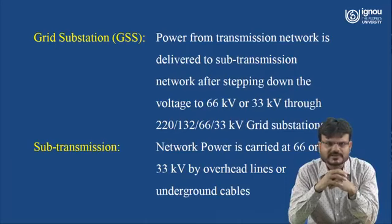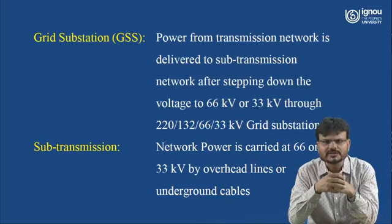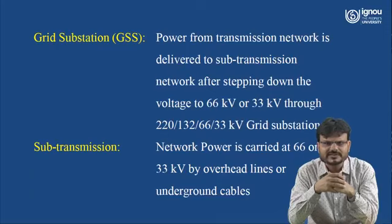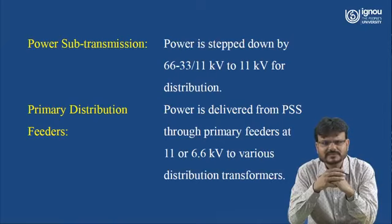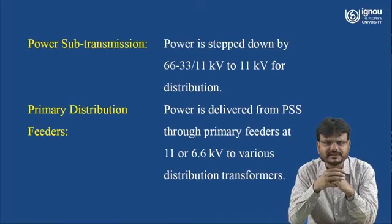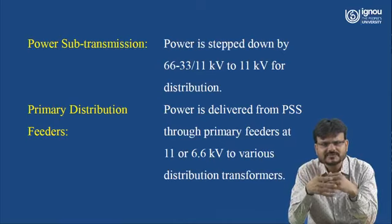There are different terminologies to understand. A grid sub-station is where power from the transmission network is delivered to the sub-transmission network, stepping down voltage to 66 kV or 33 kV through 220/132/66/33 kV grid sub-stations. Sub-transmission carries power at 66 or 33 kV by overhead lines or underground cables. In a power sub-station, power is stepped down from 66 or 33 kV to 11 kV for distribution purposes. A primary distribution feeder delivers power from the power sub-station through the primary feeder at 11 kV or 6.6 kV to various distribution transformers.